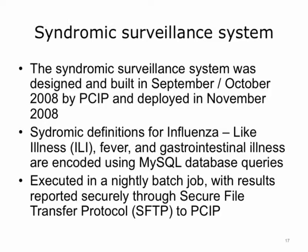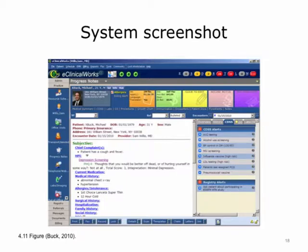The focus was on a number of syndromic definitions such as influenza-like illness, fever, and gastrointestinal illness. These definitions were encoded as database queries that ran on each practice's system on a nightly basis. The final result counts were then securely transmitted as a text file to PCIP's secure servers. The short answer for why we do syndromic surveillance is that we are looking for signals of potential illness in a community before we know the actual number of confirmed cases. A syndromic surveillance system looks for signals of influenza in medical records — for example, if a patient has a cough and a fever in the chief complaints section, that is a potential signal.